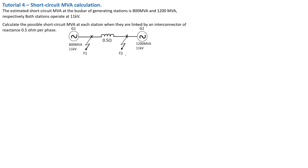That is point F1 and point F2. The problem statement says that the estimated short circuit MVA at a bus bar of a generating station is 800 MVA and 1200 MVA. That is because generator G1 is supplying a capacity of 800 MVA — meaning in case of a short circuit, 800 MVA is expected to flow onto the short circuit point. And that is exactly the same for generator 2. Both generators operate at 11 kilovolt.